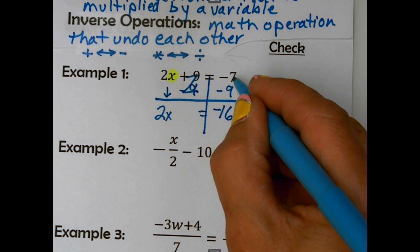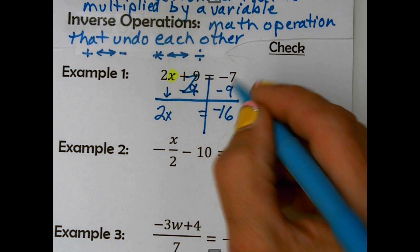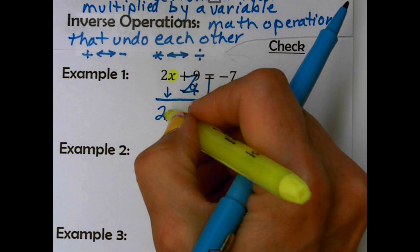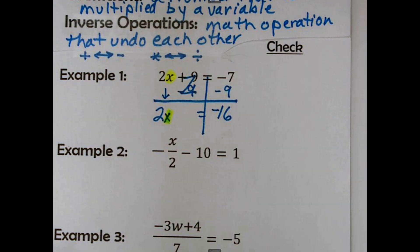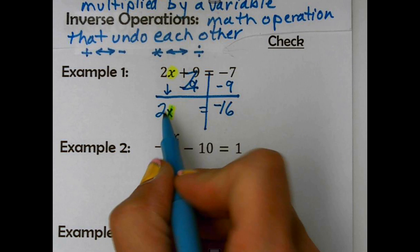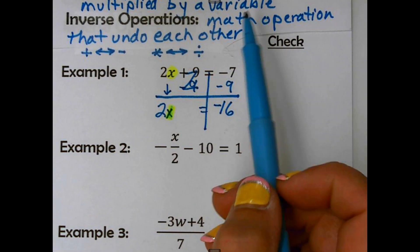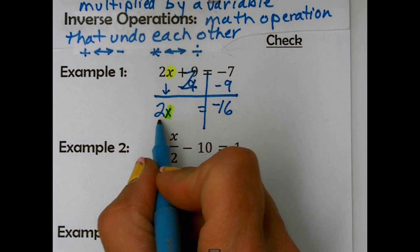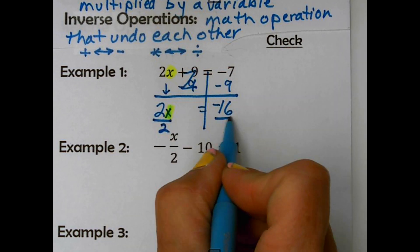Now, our last step here, this is down to a one-step equation. This is indicating multiplication. This is a coefficient, 2 times x. And remember that that definition is a number that's multiplied by a variable. So the inverse of multiplying is to divide. And I will get x equals negative 8. I'd like you to circle it.